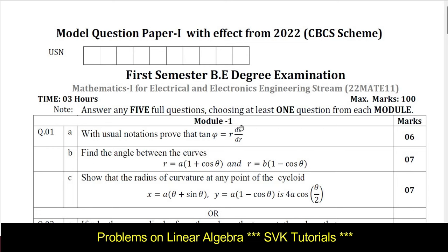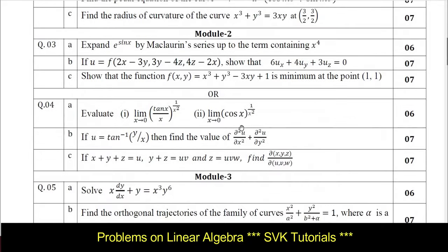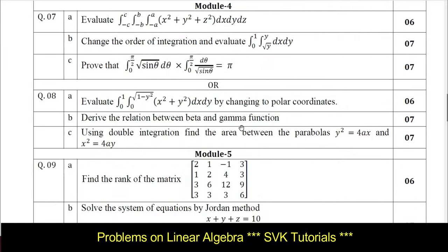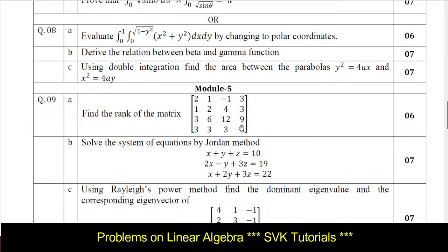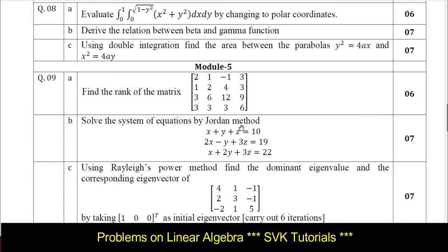As I have discussed earlier, the scheme and solution for Module 1, Module 2, and Module 3. I am going to give the solution for Module 4 later. Now, I am going to take the solution for Module 5. I will be discussing the easiest module, which can easily score 20 out of 20 — that is called Linear Algebra. Let us go with the solution for Module 5.